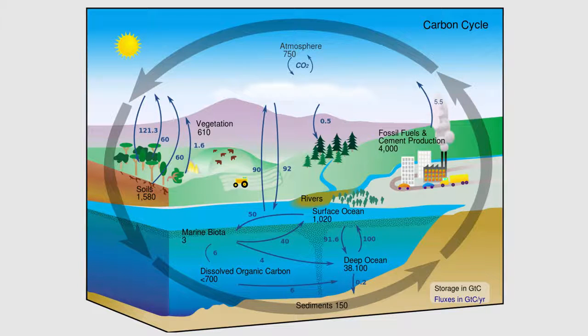After death, the animal or plant decays, and phosphorus is returned to the soil where a large part of the phosphorus is transformed into insoluble compounds. Phosphorus runoff may carry a small part of the phosphorus back to the ocean.